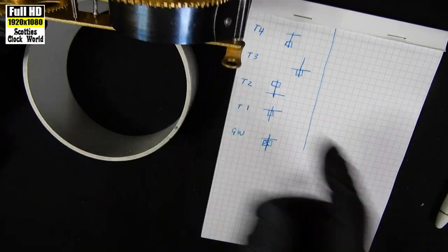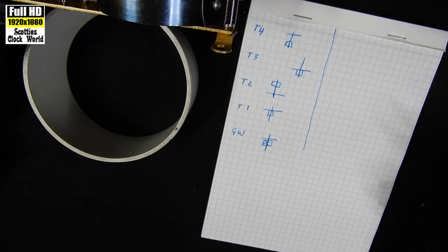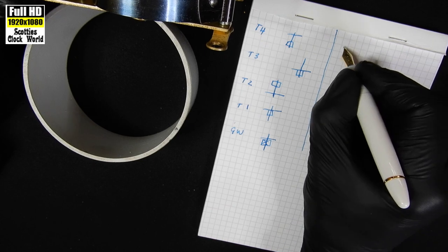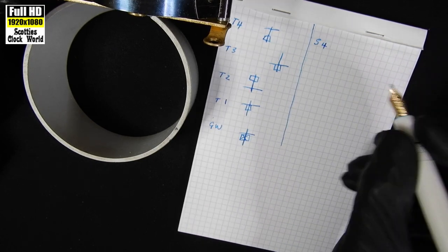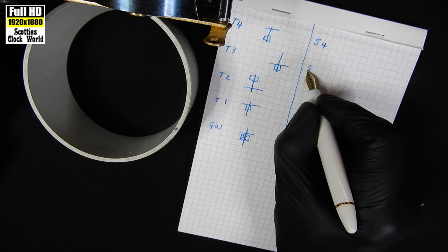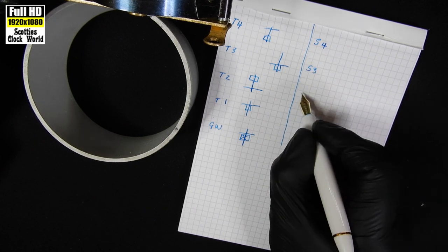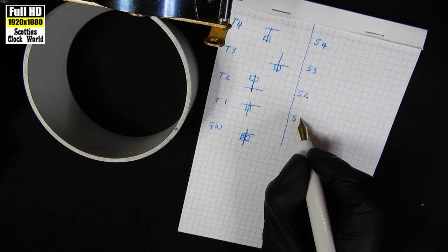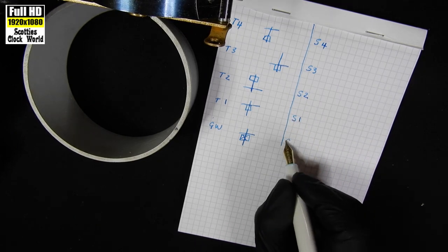So we can draw all those again. And this is on the strike side. So we've got S4, S3, S2, S1 and the great wheel.